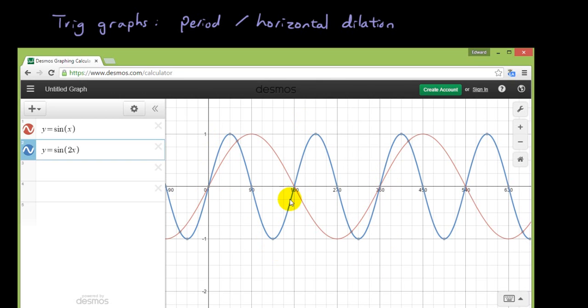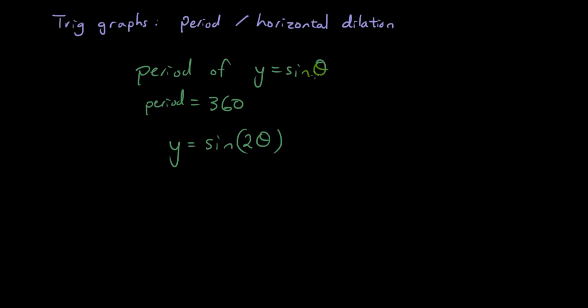It goes up to 180 then it starts repeating itself. So the period is now 180 degrees. So what happened? By doubling the input, the input was originally theta. By doubling the input, we have halved the period.